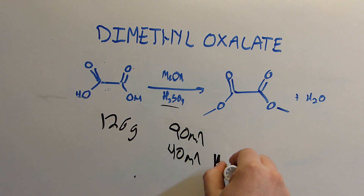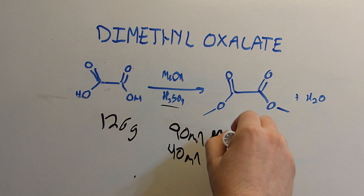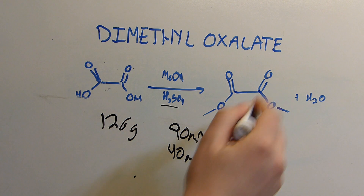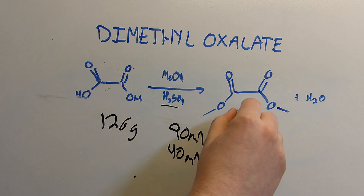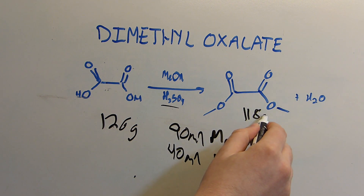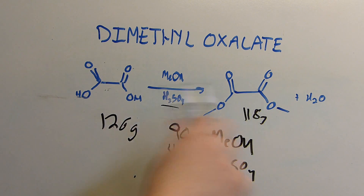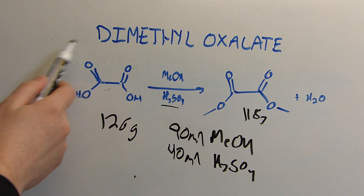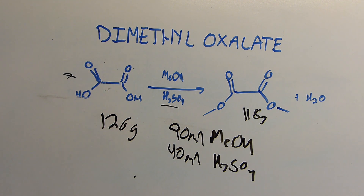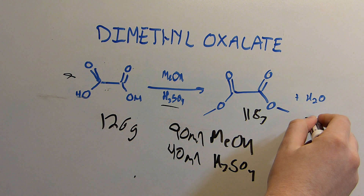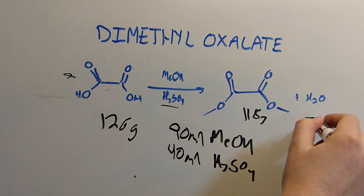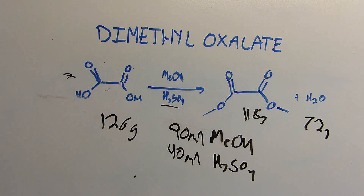So H2SO4 and methanol should yield us 118 grams of the dimethyl oxalate and then the water. This reaction itself produces two moles of water, but since the oxalic acid dihydrate also contributes some water, that's a total of four moles, which is a total of 72 grams of water. And then the workup can happen from there.